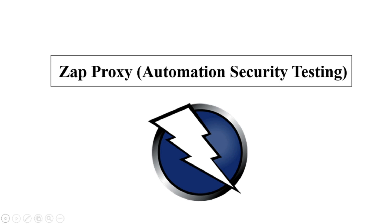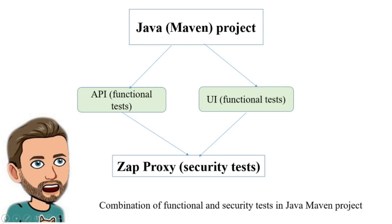Why do you need a security scanner in your project? If you already have Selenium UI or API tests in your framework, then you can definitely add security tests to your automation. You can add ZAP Java methods inside Selenium UI and Java API functional tests. It will be a real advantage of your automation framework.